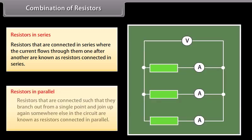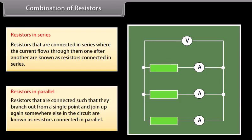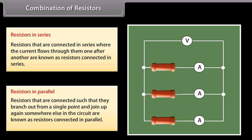Resistors in parallel: resistors that are connected such that they branch out from a single point and join up again somewhere else in the circuit are known as resistors in parallel. Here, the current through each component is the same as if it were the only component present. So, the total current flowing through the battery is the sum of the currents flowing through each branch.